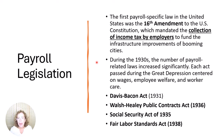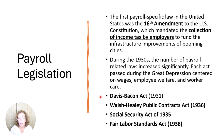Each act passed during the Great Depression centered on wages, employee welfare, and worker care. The Davis-Bacon Act of 1931 applies to governmental contract workers and guaranteed that wages would equal the local prevailing wage. As of 2023, the minimum wage for all employees affected by the Davis-Bacon Act is $16.20 per hour unless the local prevailing minimum wage is higher. Tipped employees who are subject to the Davis-Bacon Act have a minimum wage of $13.75 per hour or the local prevailing wage.